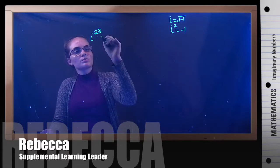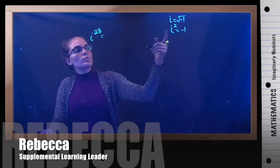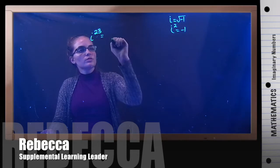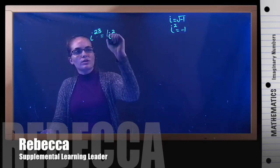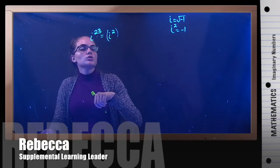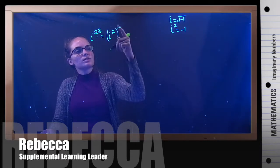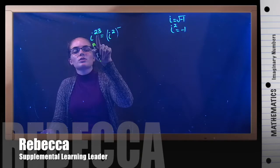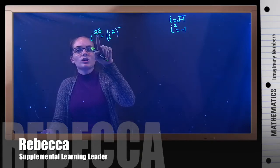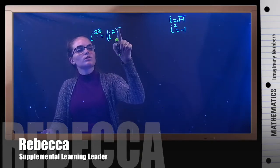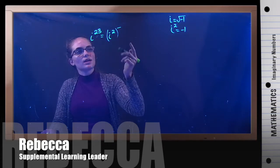We want to put this in terms of i squared because we know what i squared is, but in order to do that, you have to have an exponent that times 2 will give us 23. And because 23 is an odd number, that won't work. So I'm just going to get as close to 23 as I can.